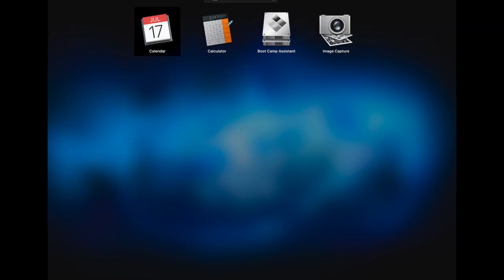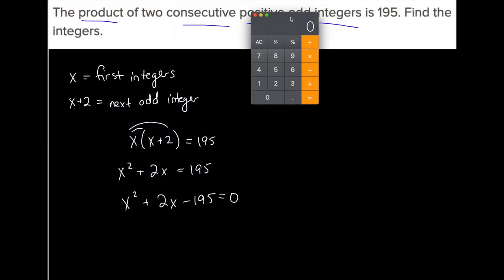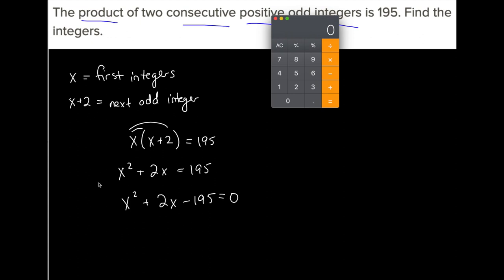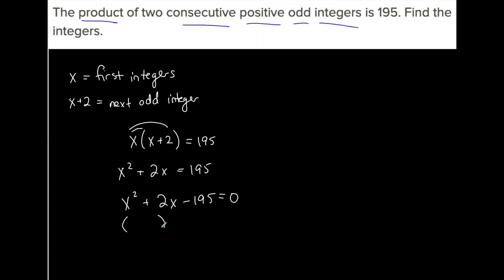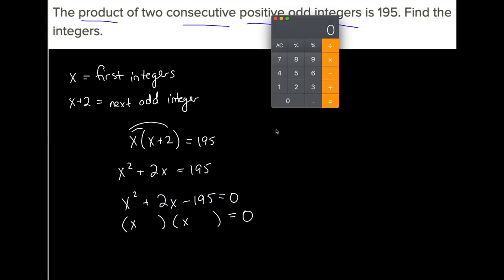I need to figure out—if I'm going to factor this, I'm going to get my calculator because I'm going to play with some numbers. This is obviously going to be X and X—two numbers that multiply to give me negative 195 that add to give me positive 2.